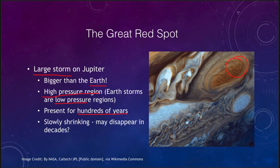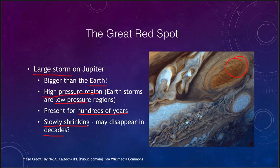Galileo's telescope would not have been powerful enough to resolve the Great Red Spot, but just a few decades later it was actually seen in the late 1600s and has been continuously observed for about 200 years. What we've noticed over that time is that it is slowly shrinking. Less than 100 years ago it was easily twice the size of the Earth; now it's down to closer to the size of Earth. If it continues at its current pace it could be gone within decades. We don't know whether the rate will accelerate or whether something will stabilize it, but measurements over the past few decades have shown that it is very significantly changing in size.